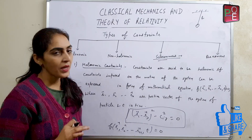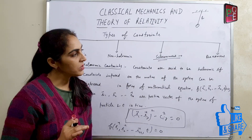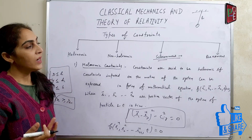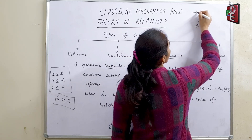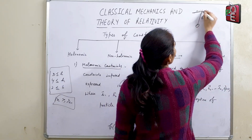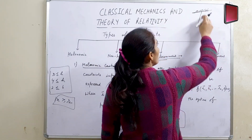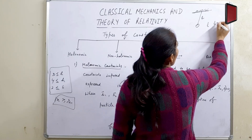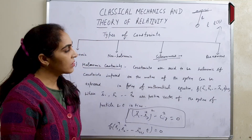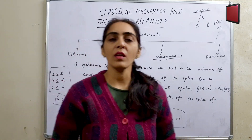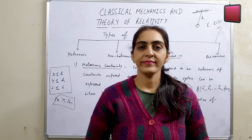Rheonomous constraints: the constraints which depend on time are known as rheonomous constraints। इसका example है simple pendulum with moving support। अगर support भी move करे, तो जैसे जैसे pendulum move करेगा, L time पर depend करेगी। ऐसे time-dependent constraints को rheonomous constraints बोलते हैं। So this is all about constraints, constrained motion, and types of constraints. Thank you.